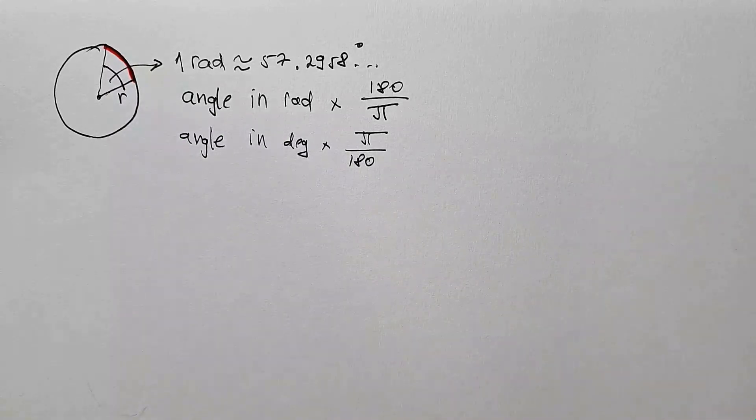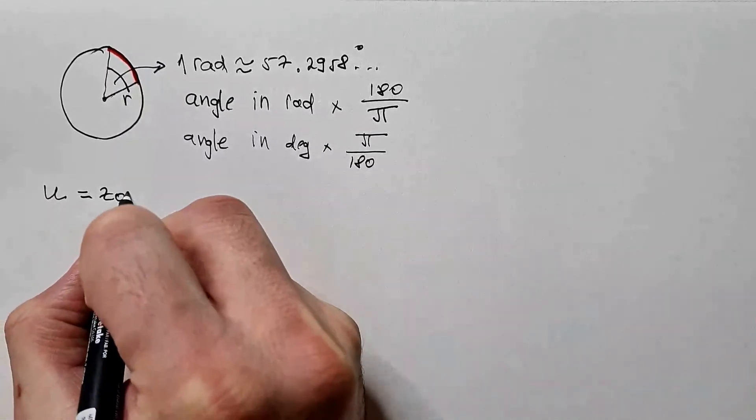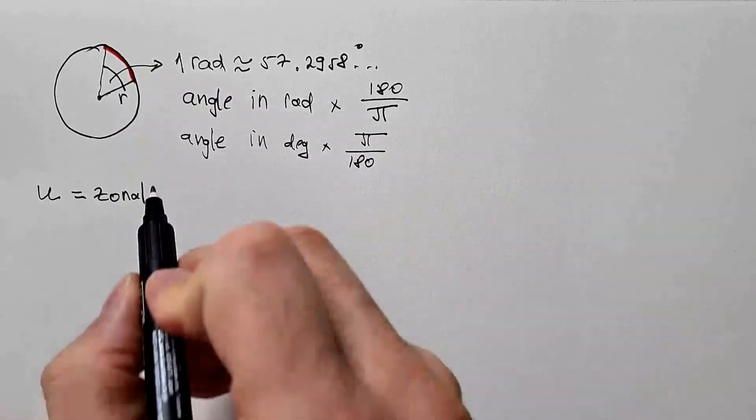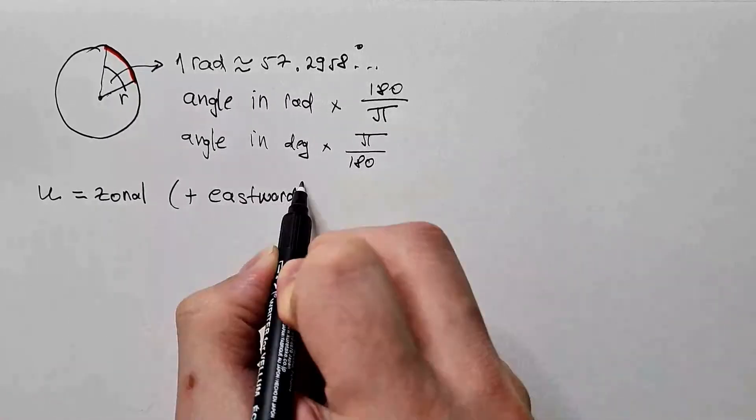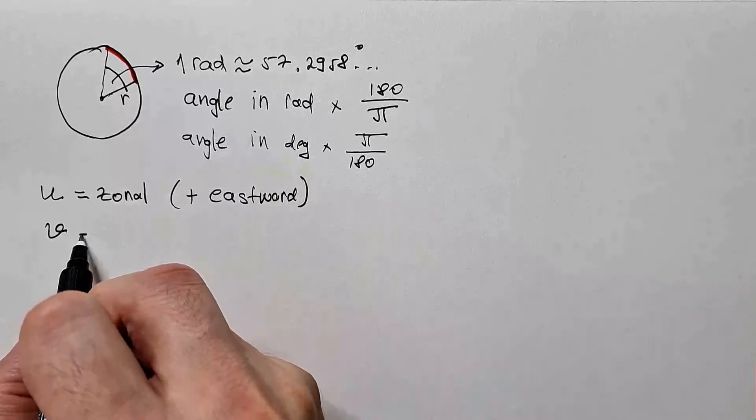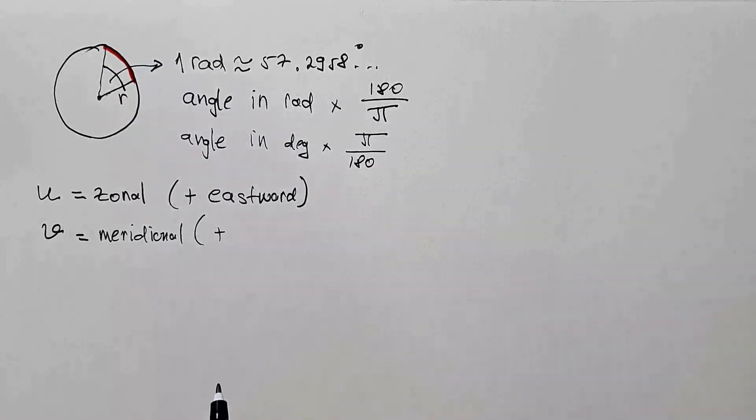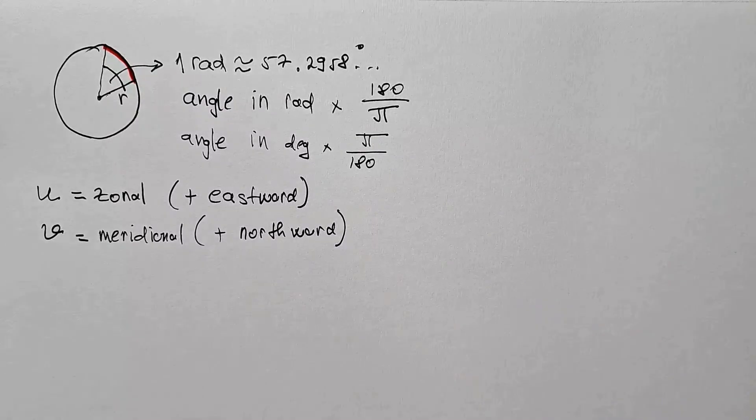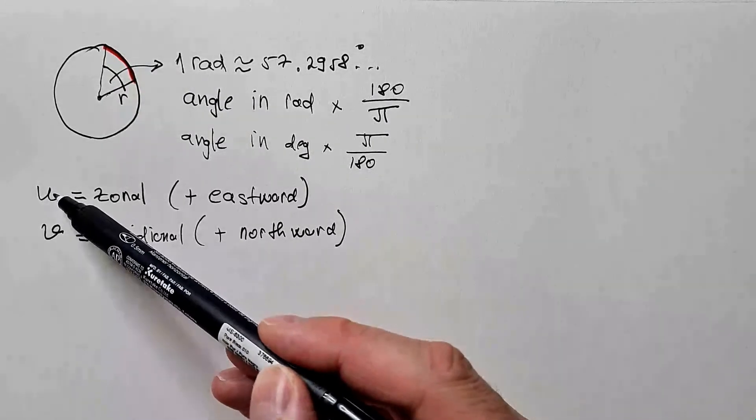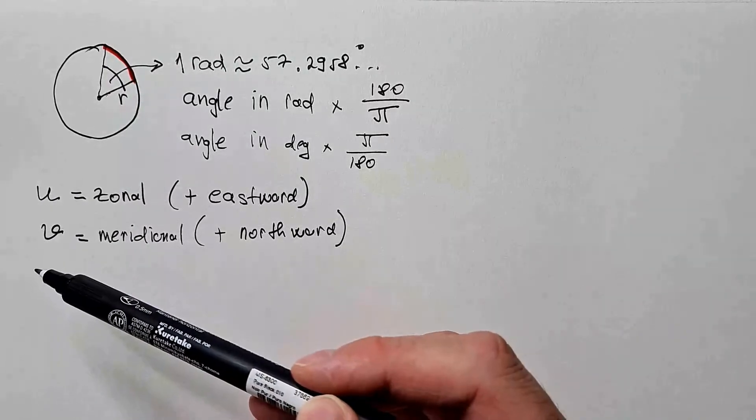Now, let's talk about wind components. In meteorology, we call zonal wind U. So U is zonal component of wind, and it is positive eastward. V is meridional component, and it is positive northward. Let's run through one example where someone gives us U and V components, and we need to figure out everything else.